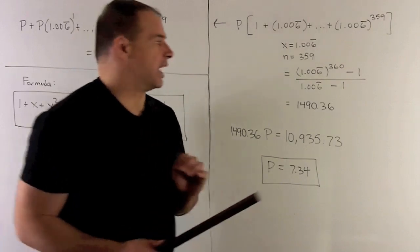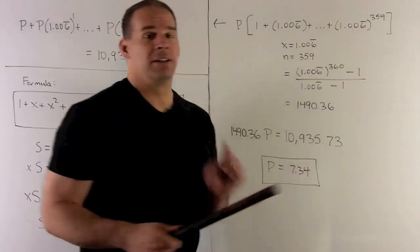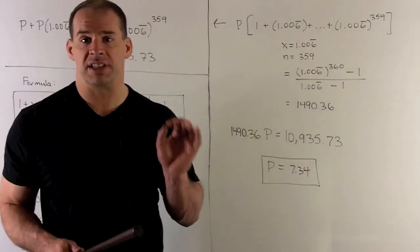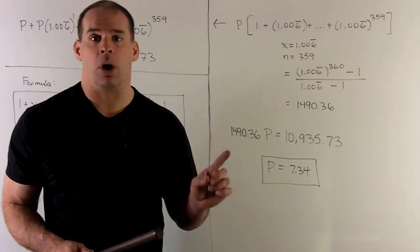So the formula says the sum here is going to be equal to 1.006 repeating to the n plus 1. So 360 minus 1 over 1.006 repeating minus 1.